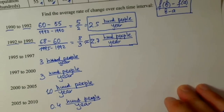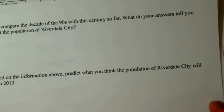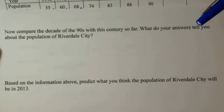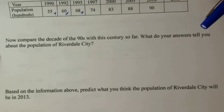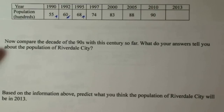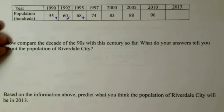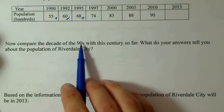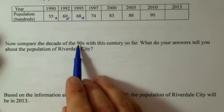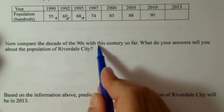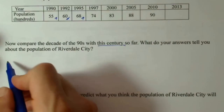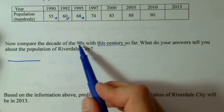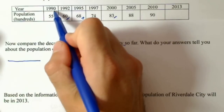Now we have a couple more questions. We need to compare the decade of the 1990s with the new century so far. The time interval is 10 years, or a decade. For the last decade of the 90s, we're looking at 1990 to 2000. Change in output over change in input.